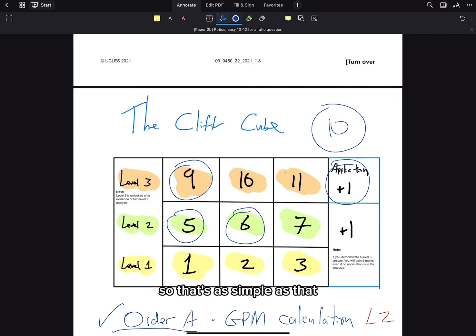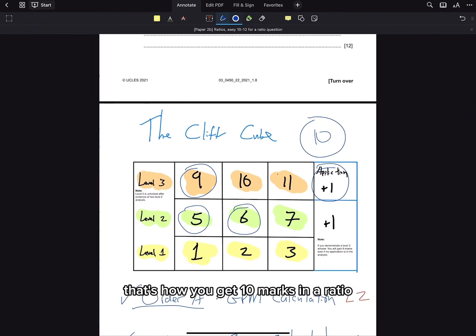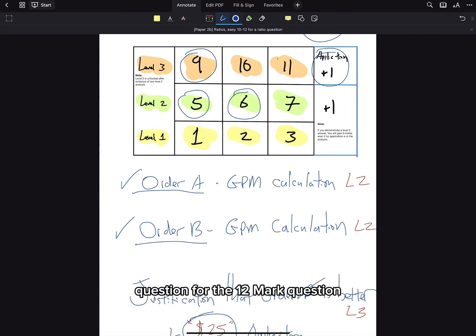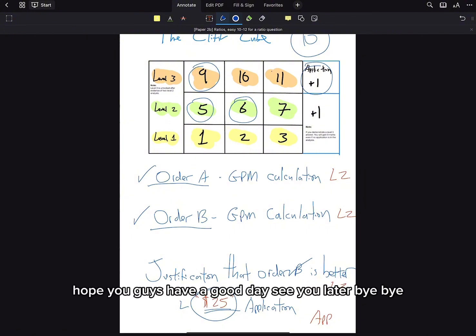So that's as simple as that. That's how you get 10 marks in a ratio question for the 12 mark question. Hope you guys have a good day. See you later. Bye-bye.